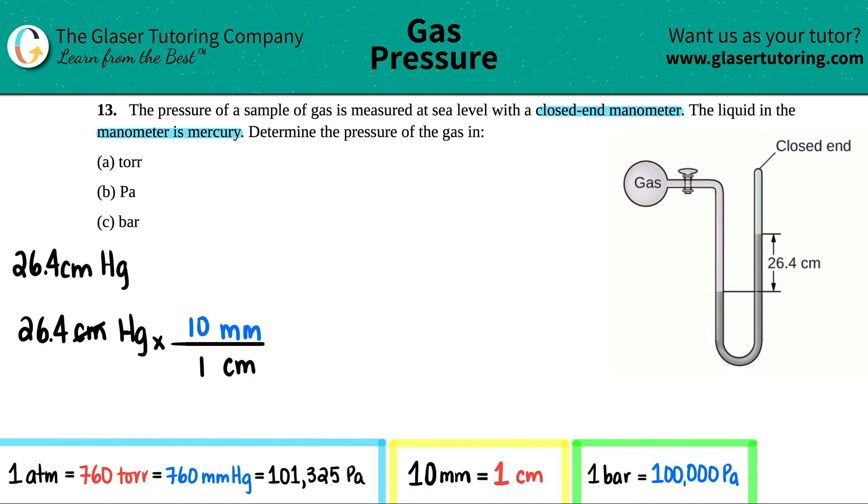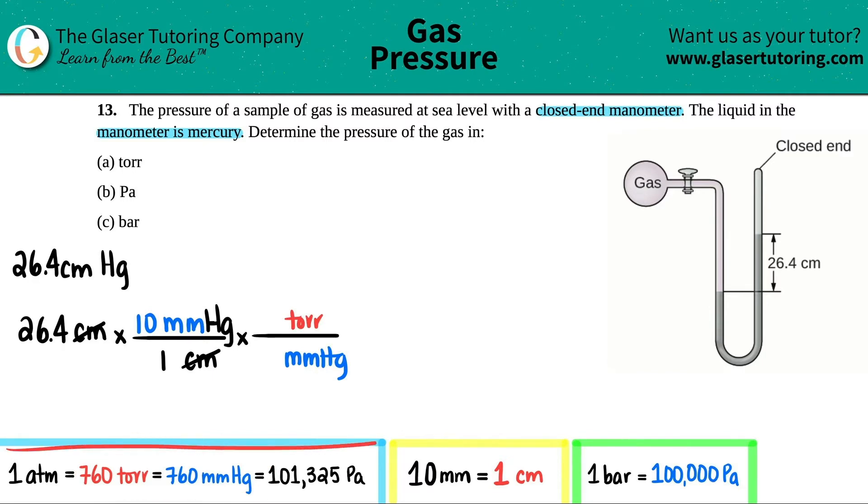For every 10 millimeters that equals one centimeter, the centimeters cancel. Now I can hook the mercury up with the millimeters to make it all one thing. Now we have millimeters of mercury so we can go to torr. Times by a ratio again, millimeters of mercury on the bottom and we want torr on the top. If we go to our conversion, these four are all equal to each other.